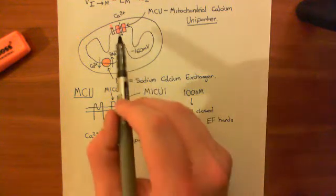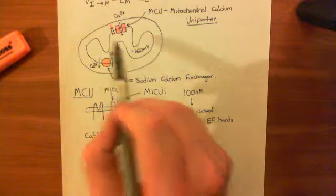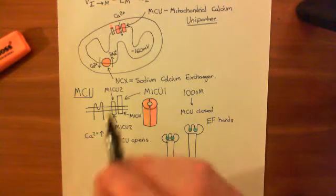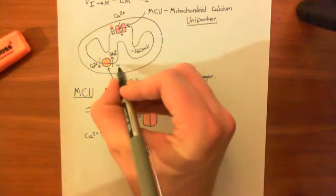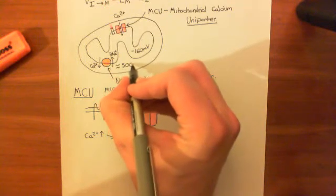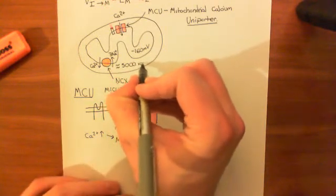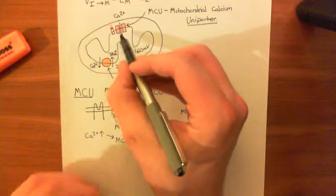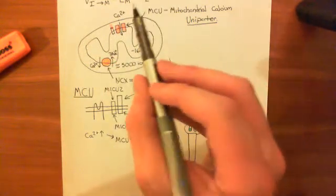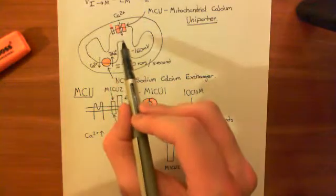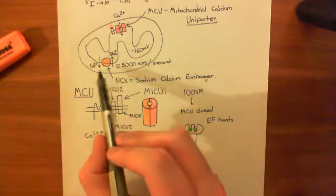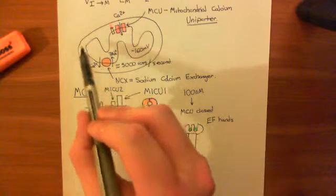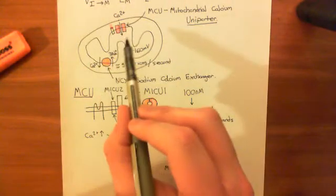And you might wonder, well, surely the sodium-calcium exchanger is just going to turn on, and it's just going to extrude all the calcium again. And you would be right. The thing is, I told you that the maximum rate that this thing can operate at is 5,000 calcium ions per second. Whereas channels, which is what this is, can conduct millions per second. So basically, this will let in calcium faster than this can extrude it again. So calcium will go up transiently in the matrix if calcium goes up in the cytoplasm.